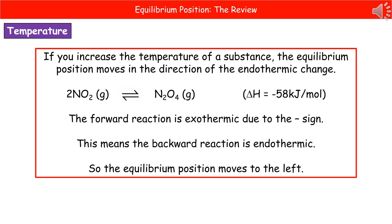The final condition that we could change is the temperature. When we increase the temperature, the equilibrium position is going to move in the direction of the endothermic change. This is where we need to have a look at another bit of information given in the question, which is the delta H on the right there.